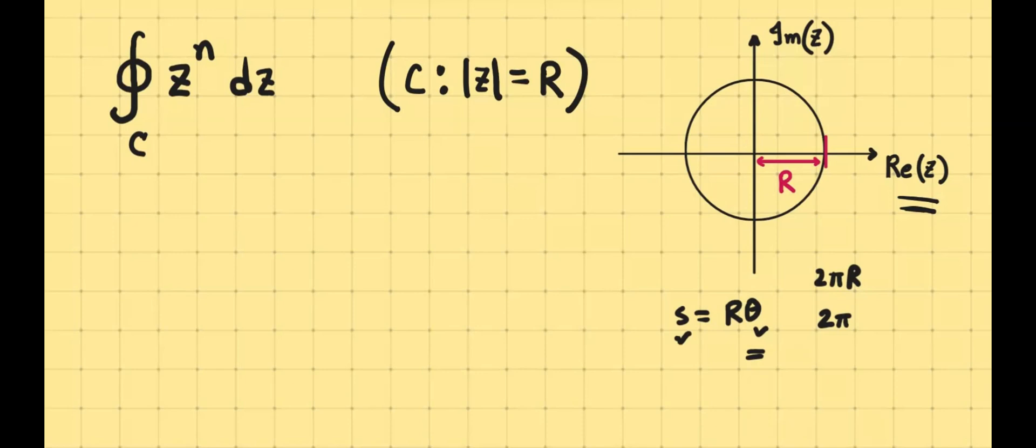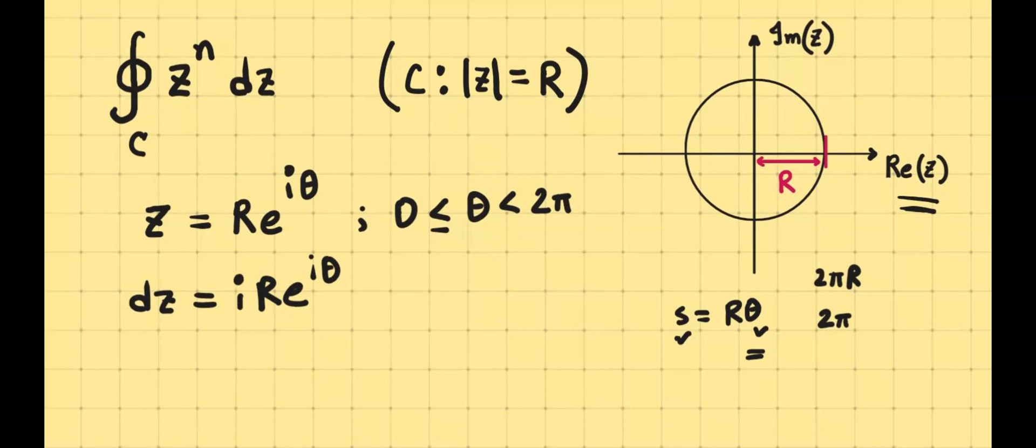So if we parameterize this circle, we write the variable z along the circle to be expressed with R times e to the power i theta, where theta starts from 0 and theta ends at 2π. When this is the case, we can find out dz, which turns out to be R times e to the power i theta, and then there is an extra i because of the differentiation rule, times d theta.